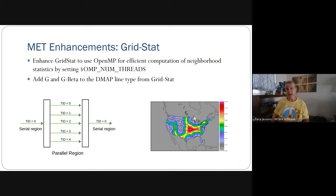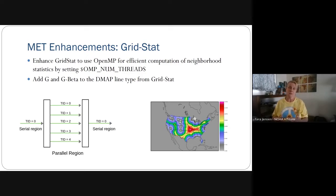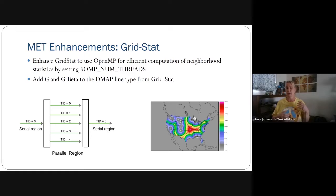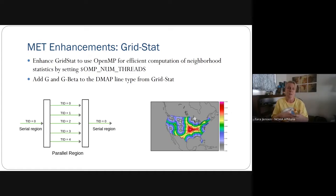For grid stat, we added new capability — a contribution from the Met Office — to do domain decomposition for parallel processing using OpenMP, to start making computation more efficient and speed up especially memory- and computationally-expensive methods including neighborhood methods. With this parallel processing enhancement, we've seen a reduction in computation of neighborhood statistics of about 50%. Now that we have this formula for enhancing grid stat, we're planning to work with the Met Office to transition this capability over to other computationally challenging tools.